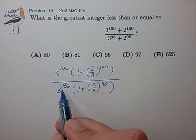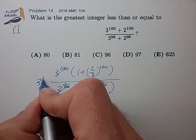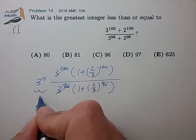And we can do some cancellations out front. So 3 to the 100th over 3 to the 96, that's just equal to 3 to the 4th, and that's just equal to 81.